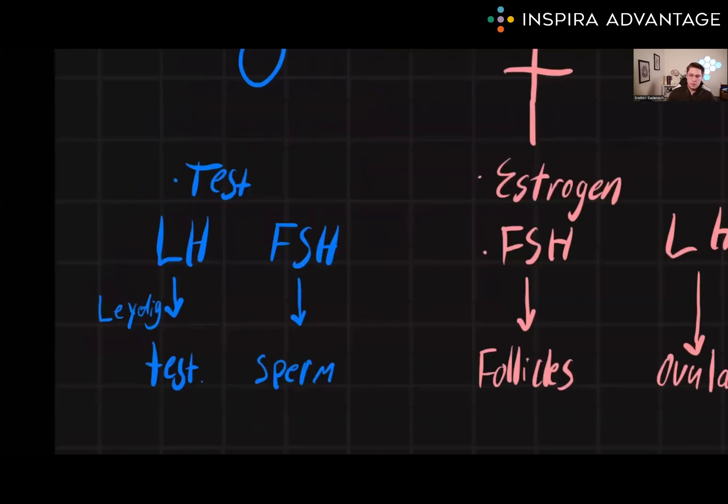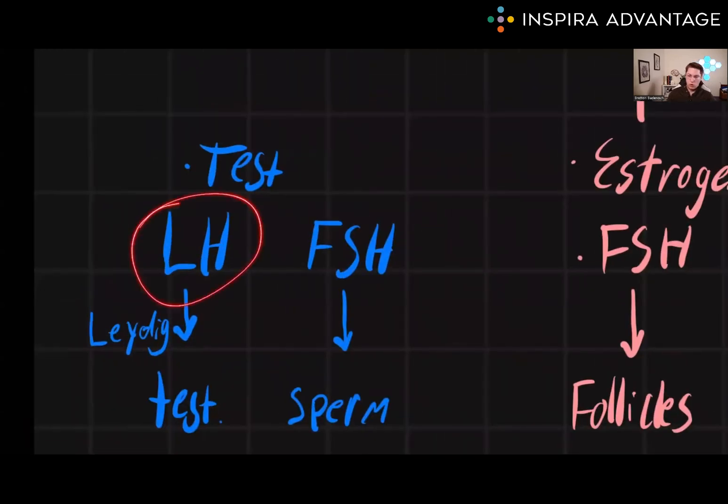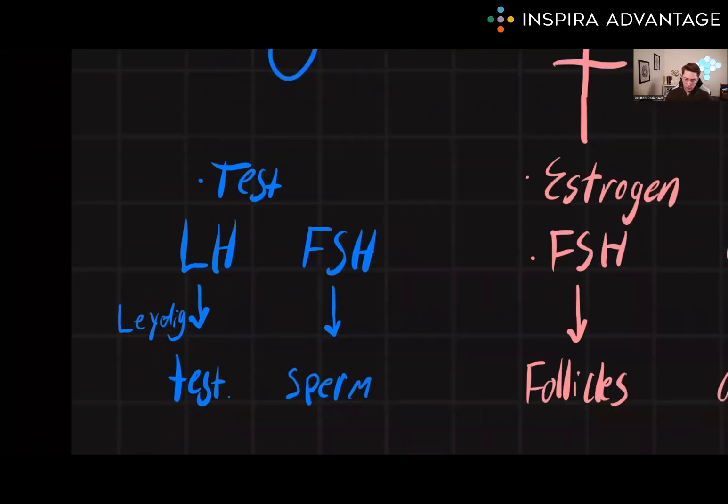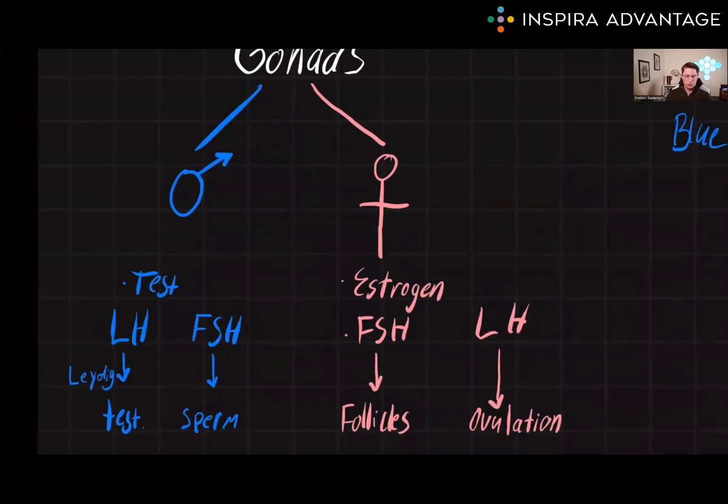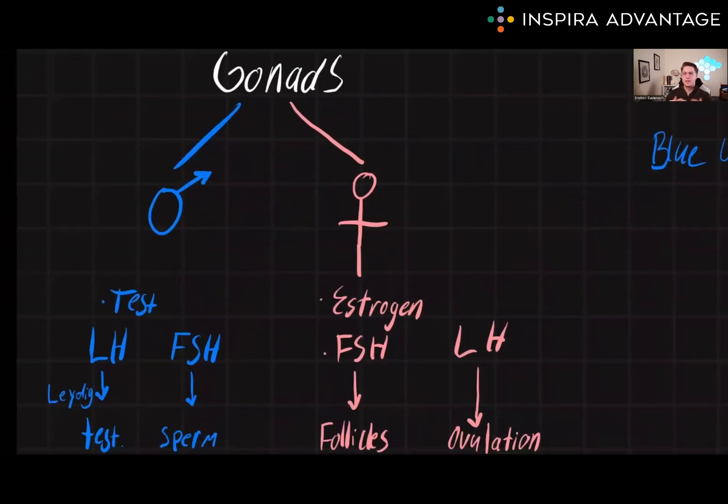In the testes, the main gonadotropin is luteinizing hormone, which triggers the production of testosterone by acting on Leydig cells, whereas FSH in males helps to produce sperm. While these hormones do have functions on other things, these are the main ones you need to know for the MCAT. So don't worry too much about memorizing all the accessory details of these hormones for the gonads.